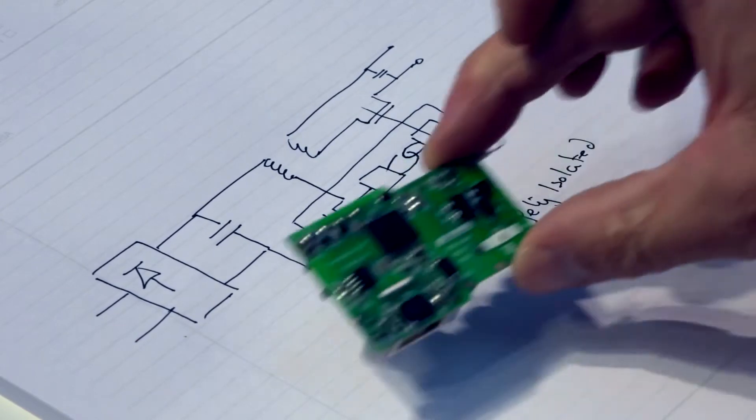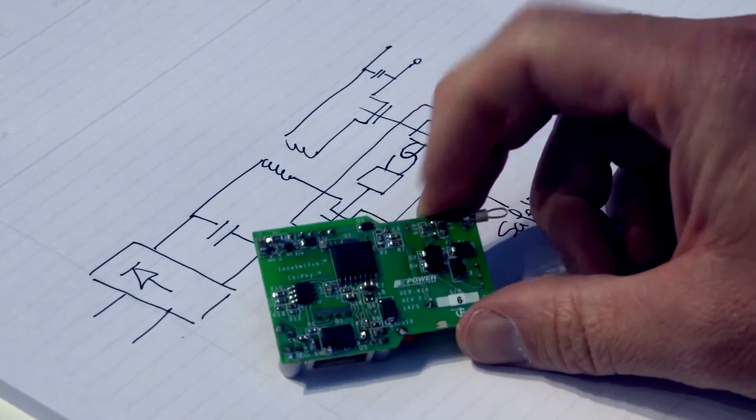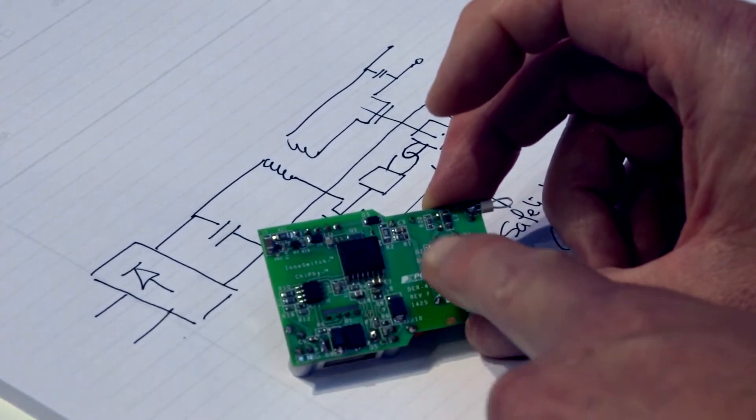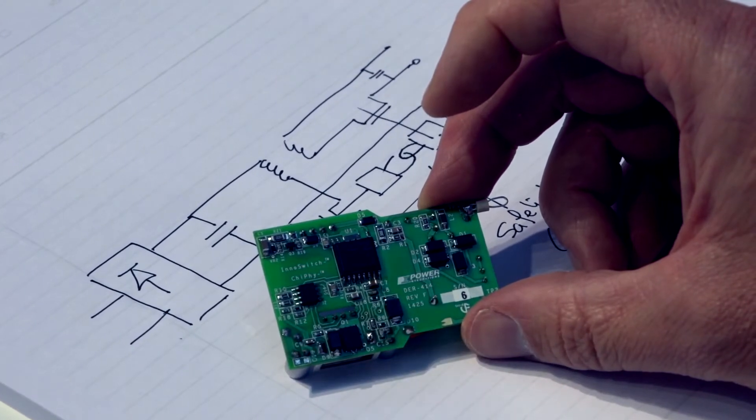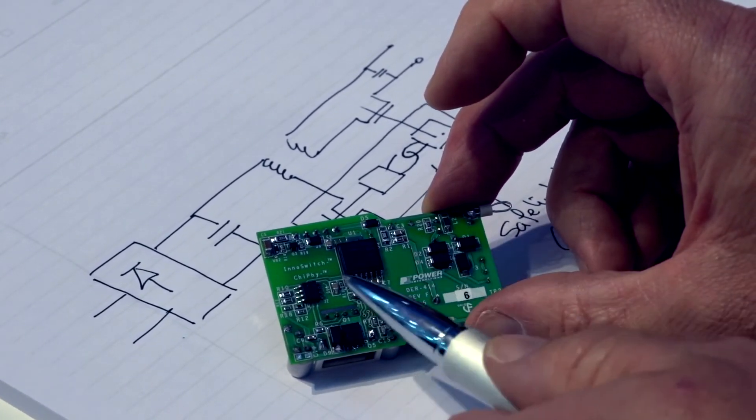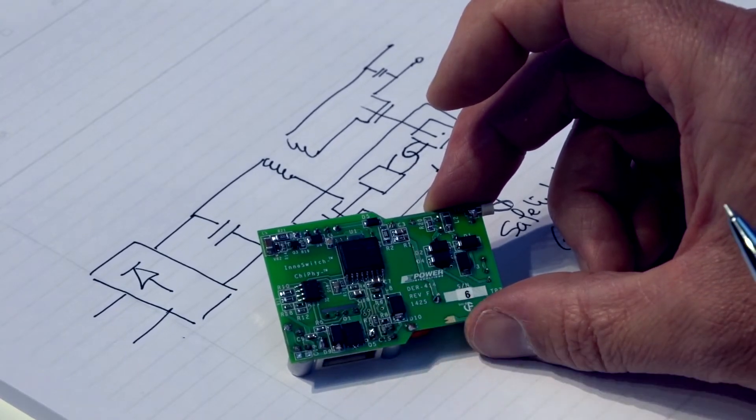And this is an example. This is the inner switch product. This is the inner switch chip here bridging you'll see it's bridging this keep out zone in the isolation area between the this is the primary side this is the secondary side and our chip bridges the isolation barrier between them.